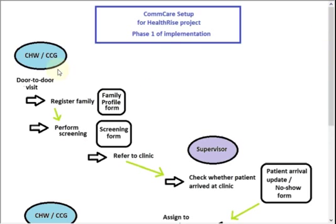The flow of things starts with your community health worker or CCG who goes and does a door-to-door visit. During a door-to-door visit they'll normally start by registering the family with the family profile form, and then on any members present they can perform a screening using the screening form. Depending on the outcome, if there is high blood pressure or blood sugar, they can then refer them to a clinic.